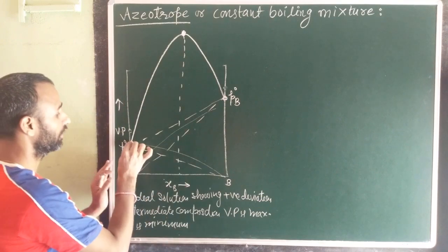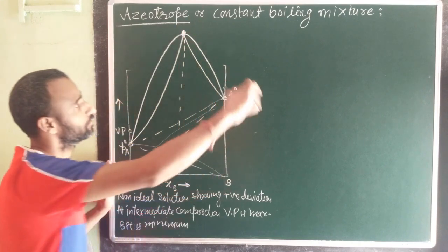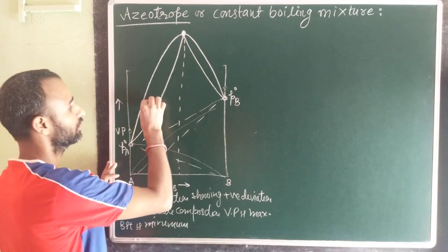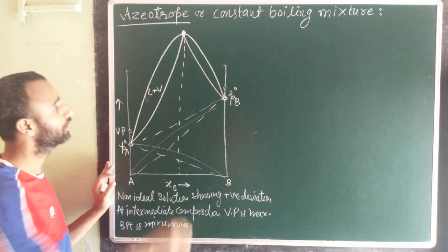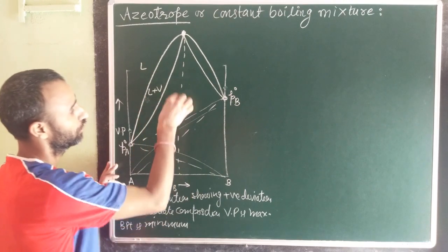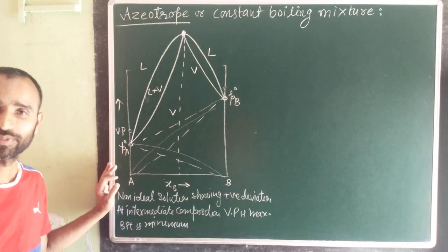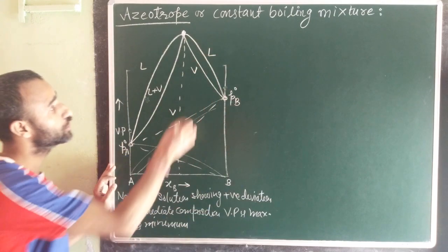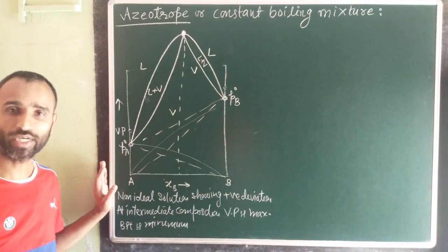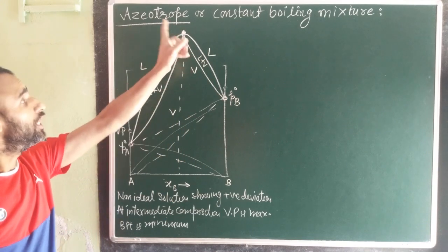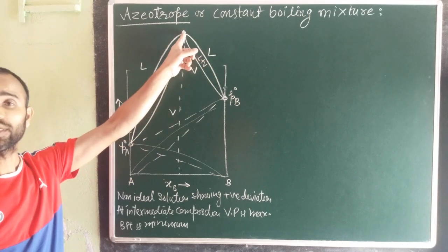Distillation can be done, but the composition in the solution phase as well as the vapor phase remains the same. This is a biphase region — liquid as well as vapor are present. At this composition, the liquid composition and vapor composition merge together.